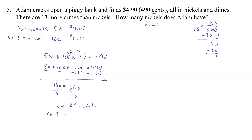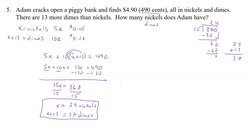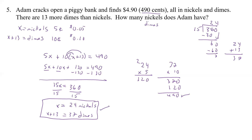So we have 24 nickels, and X plus 13 means 24 plus 13, which is 37 dimes. Now let's check: 24 nickels times 5 cents is 120 cents, and 37 dimes times 10 cents is 370 cents. 370 plus 120 equals 490 cents — that's exactly what it's supposed to be, so it checks out.